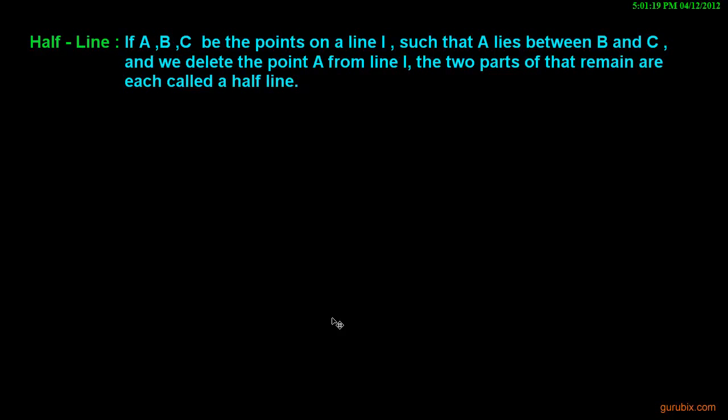If A, B, C be the points on a line L, suppose we have a line L and here is point B and here is A and here is C, such that A lies between B and C.